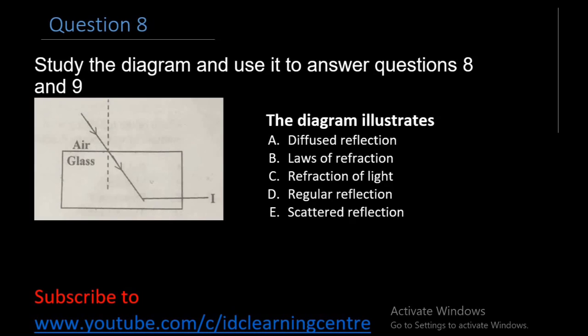Question 8: Look at the diagram, study the diagram and use it to answer question 8 and 9. So question 8: This diagram illustrates what? Is it A. Diffuse reflection, B. Laws of refraction, C. Refraction of light, D. Regular reflection, E. Scattered reflection? The right answer is simply refraction of light. From the diagram, you know that when a ray of light moves from one medium to another, it bends. So once there is a deviation like you have here, that is the meaning of refraction. So the phenomenon of bending of a ray of light as it travels from one medium to another is simply refraction. The answer is C.